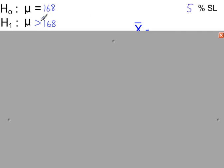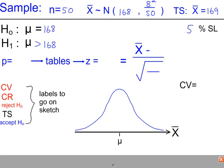So this will be a 1-tailed test, because we're looking for an increase. So we label up the sketch. The population mean is 168. We're looking for an increase. So there's 5% here, which means there is 95% here.